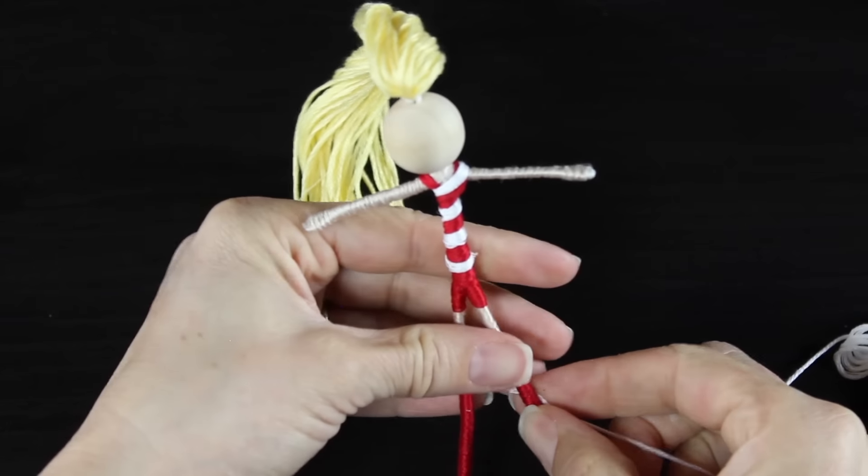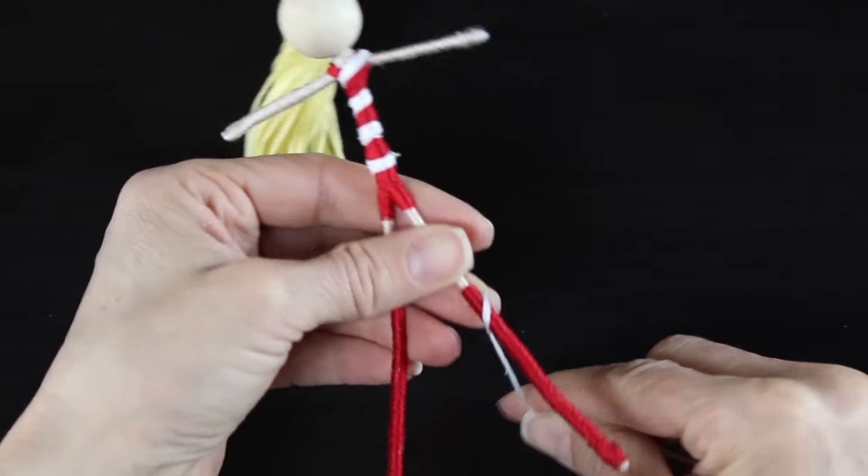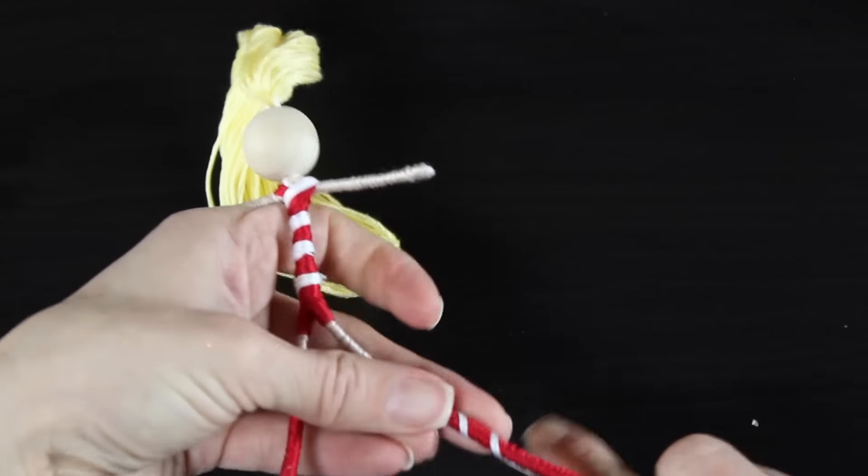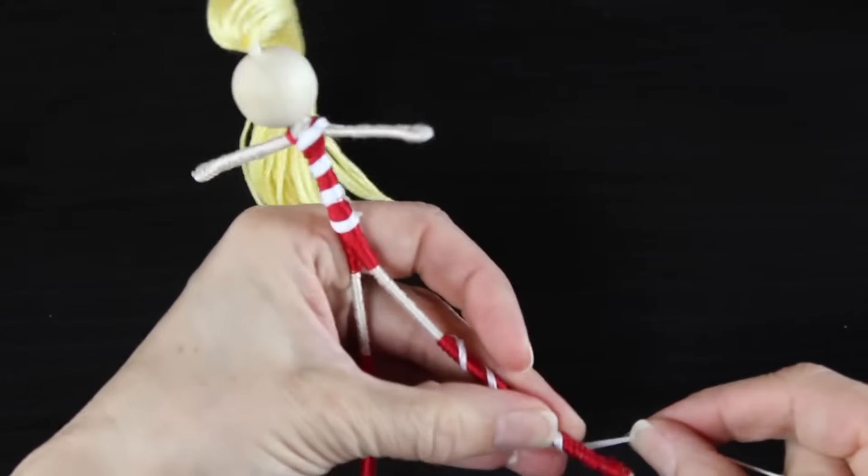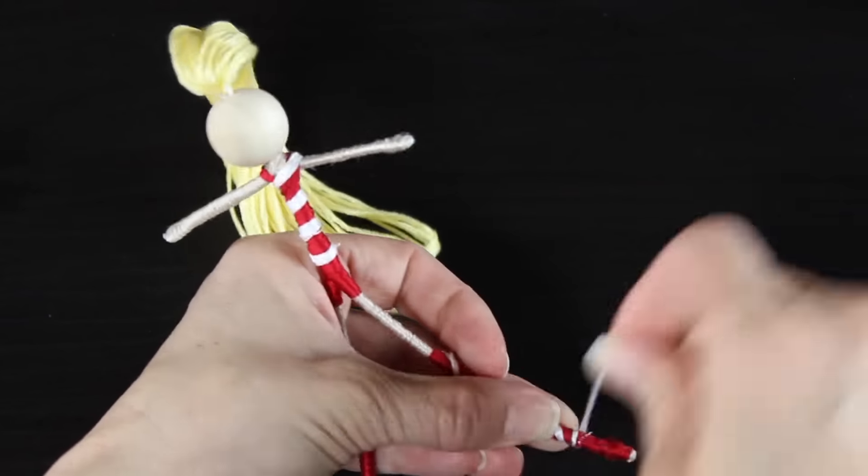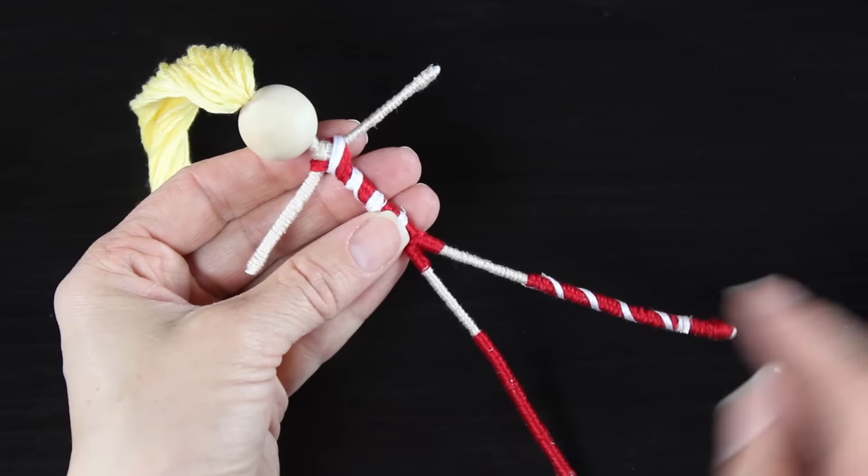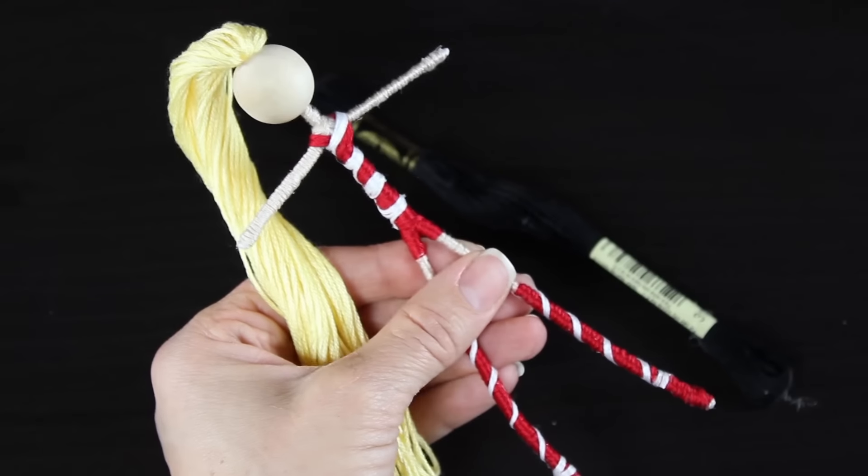Then we're going to do pretty much the same thing on her socks, but this time we're going to start at the top. I put a small dab of glue on the back of her leg and just start to wrap at an angle all the way down. When you get to the bottom—actually, I didn't go all the way to the bottom, I got close because we're going to be adding shoes. Decide how high you want her boots to go and make sure the stripes go a little bit past that.